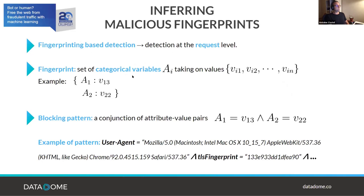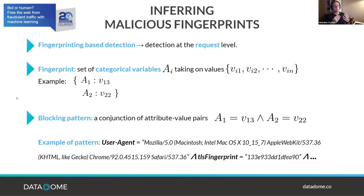For each request we extract a fingerprint. From a mathematical point of view, a fingerprint is a set of categorical variables A_i with a possible set of values. We generate blocking patterns — a conjunction of attribute-value pairs — such as: user agent is Chrome 92 AND TLS fingerprint equals a specific value, adding as many clauses as needed to characterize malicious activity.